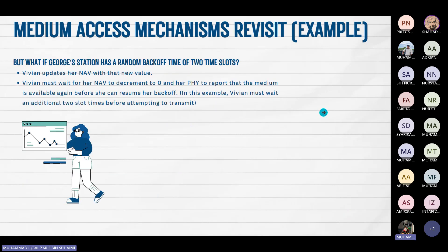But if Josh's station has a random backoff time of two time slots, Vivian will update her NAV with that new value. Vivian must wait for her NAV to decrement to zero and for the physical layer to report that the medium is available again before she can resume her backoff. In this example, Vivian must wait an additional two slot times before attempting to transmit, as shown in the example on this slide.